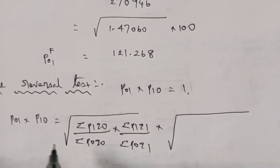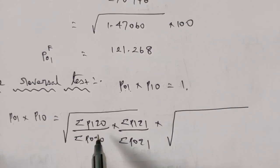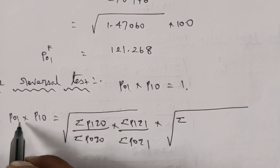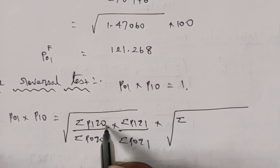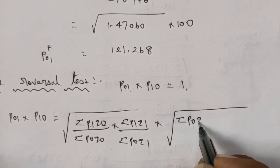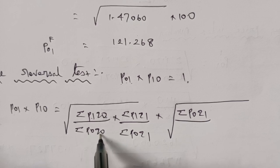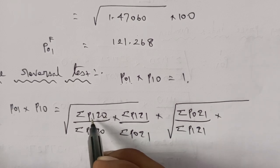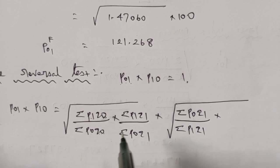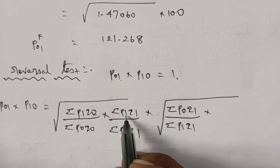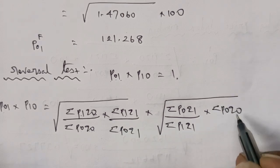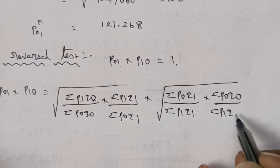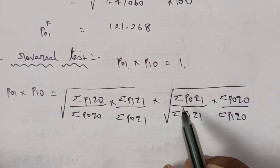Shortcut to apply Time Reversal Test: observe that in P01 the subscripts are 0→1, and in P10 the subscripts are 1→0, so numerator and denominator swap. The summations P0Q1, P1Q0, P1Q1, P0Q0 all appear, and when multiplied together, terms cancel. When we memorize the formula, it becomes easier to apply.